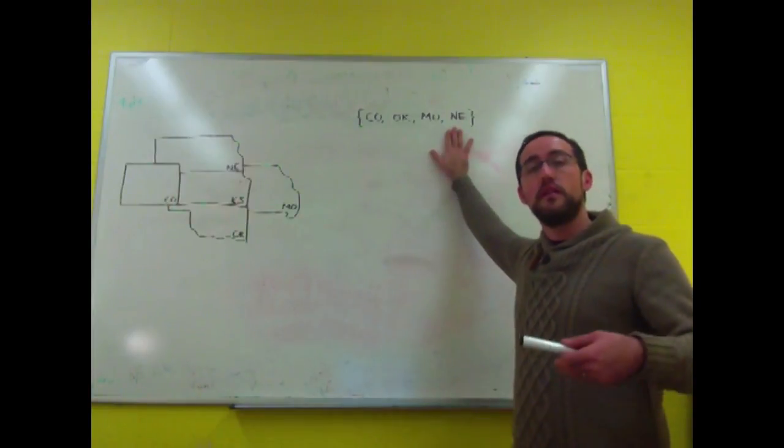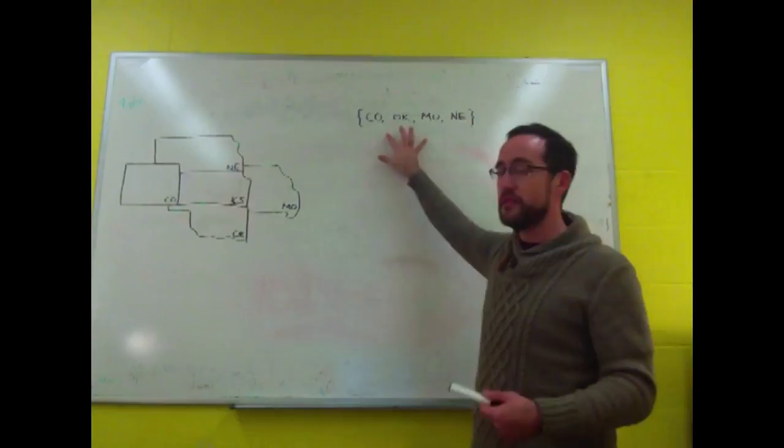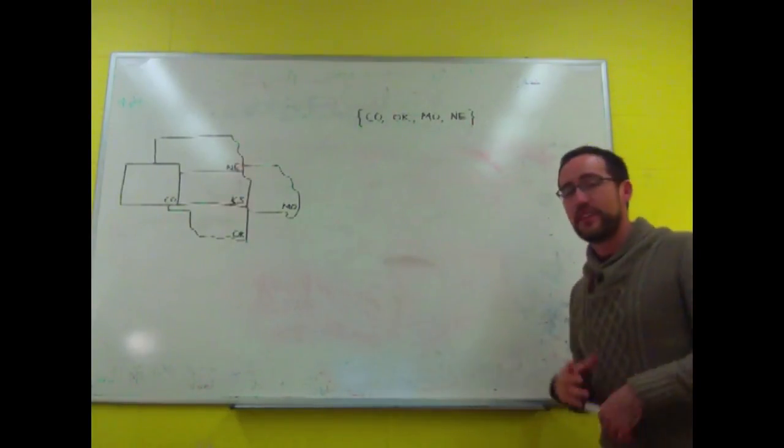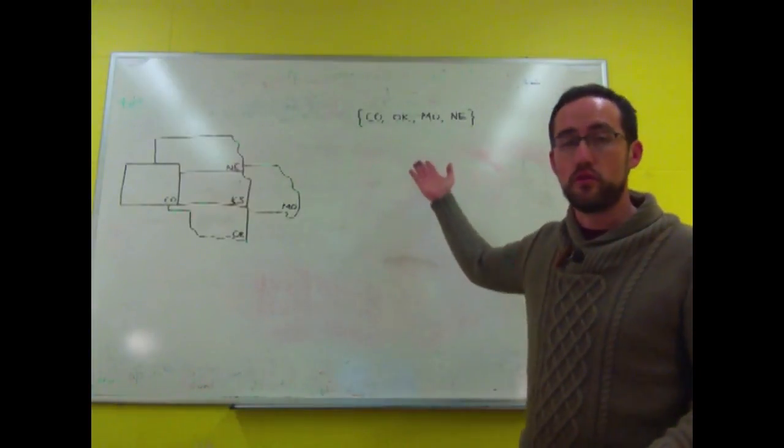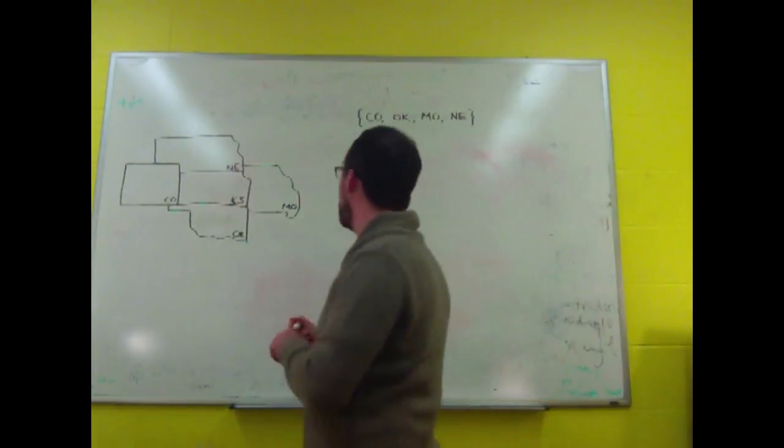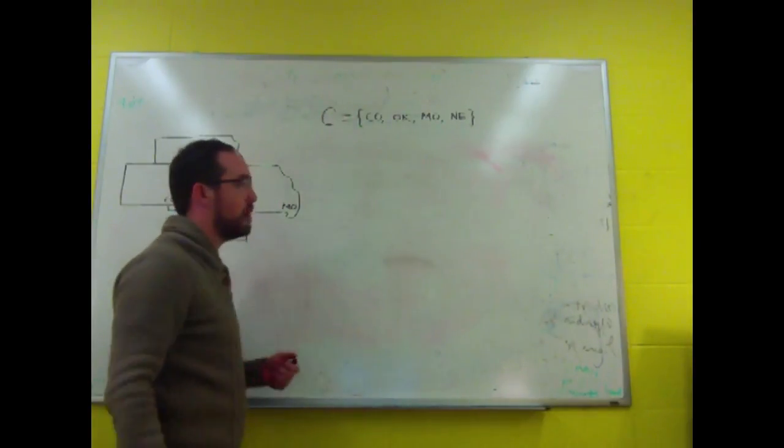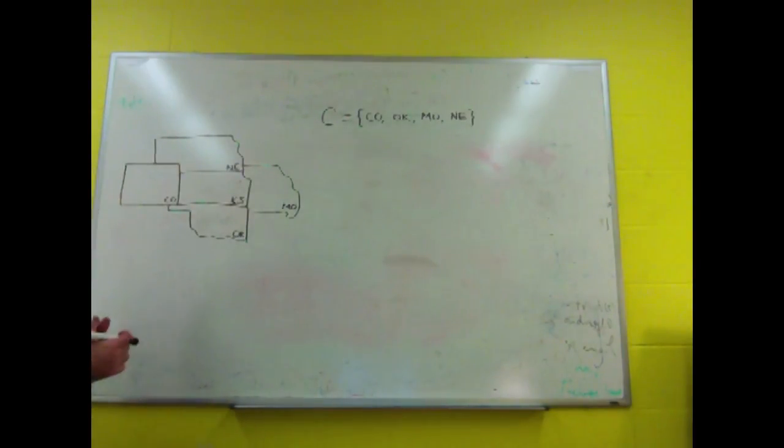Straightforward. And of course, because it is a set, we can order these any ways we like, as long as it's the same four states. Now we can give that set a name. We can call it the set containing Colorado, Oklahoma, Missouri, and Nebraska, or we can just give it a name, say C. We can use a capital letter for it. So that's the set C, and we can form any set we want with any number of these states.